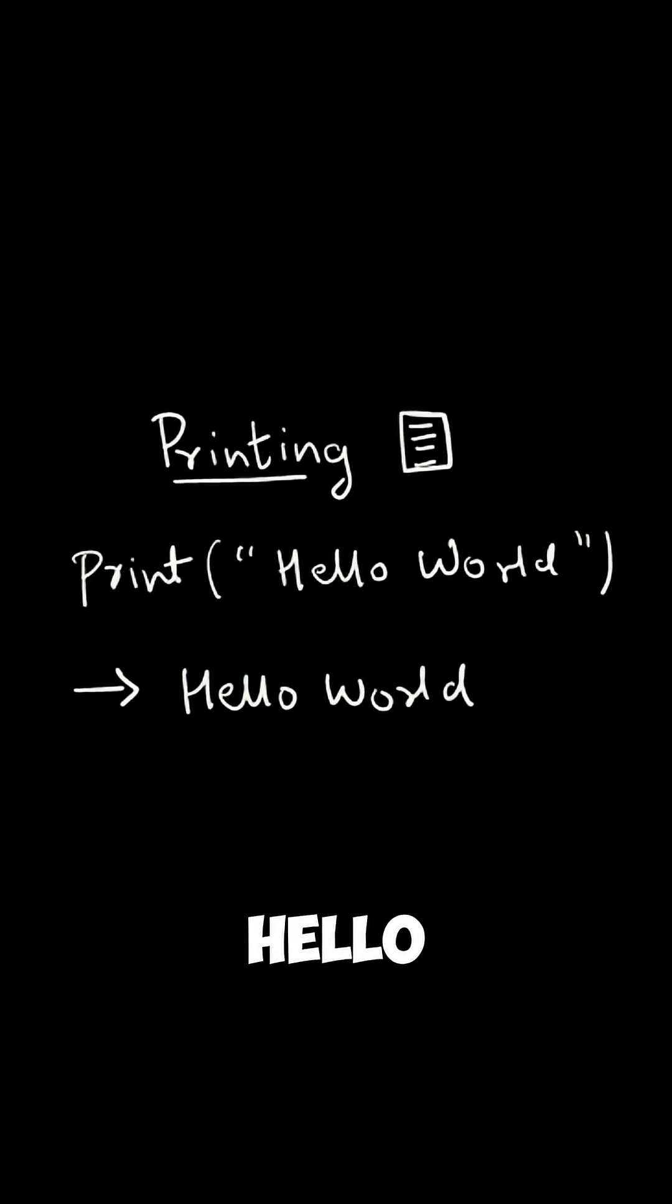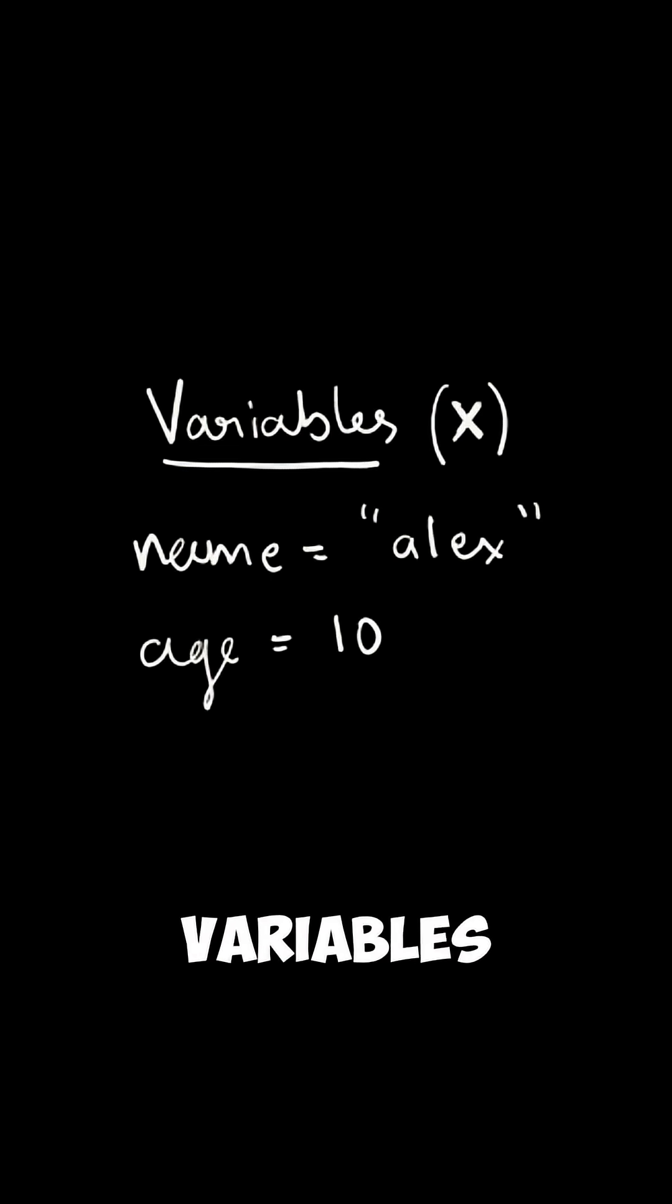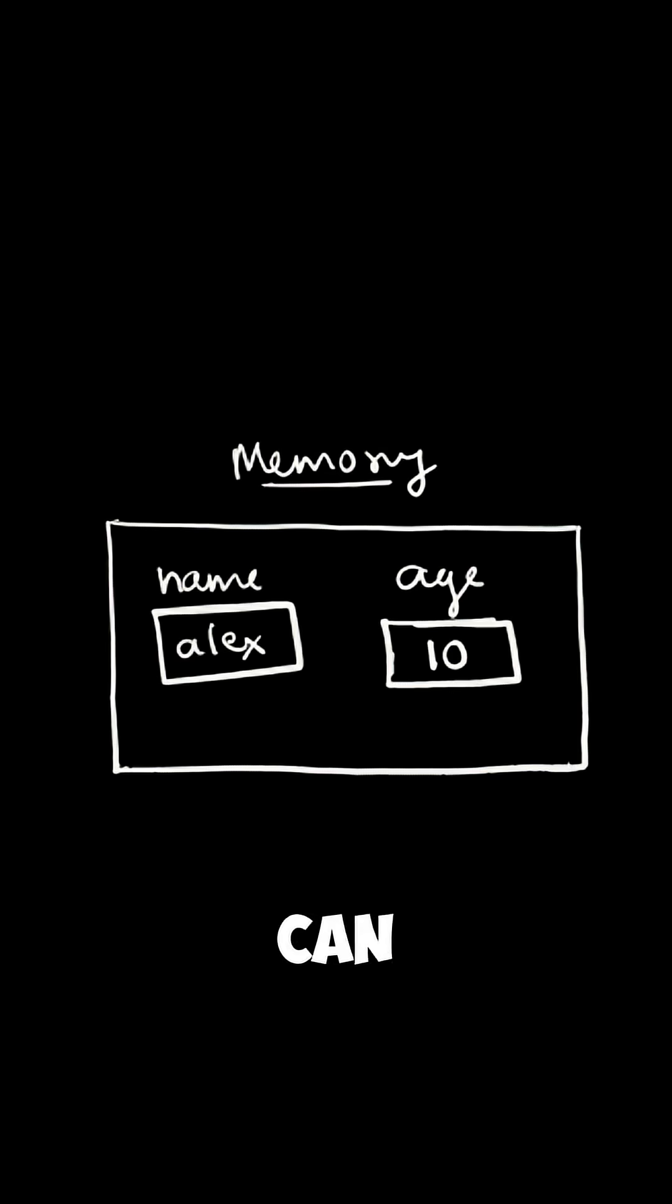Every coder prints hello world and marks the first step into the journey of coding. Next is variables. Variables store some information like your name or age. You can use them to store and print data.